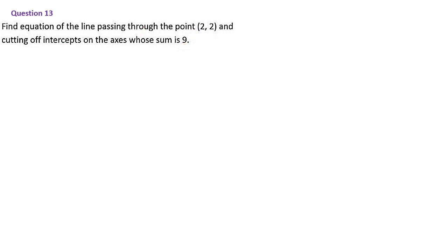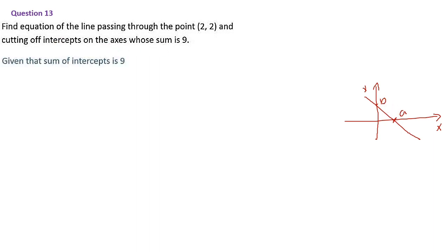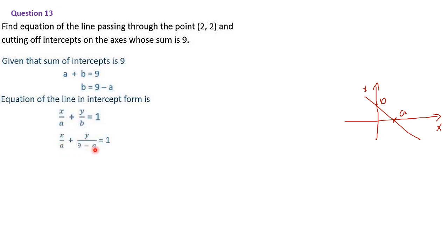Expanding: 18 − 2a + 2a = 9a − a², so 18 = 9a − a². Rearranging: a² − 9a + 18 = 0. Factorizing: sum is −9 and product is 18, so the numbers are −6 and −3. Thus (a−6)(a−3) = 0, giving a = 3 or a = 6.